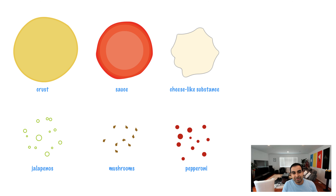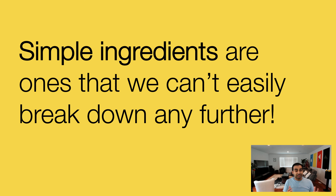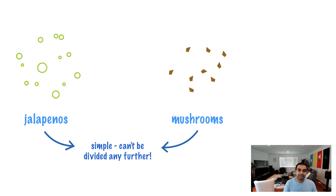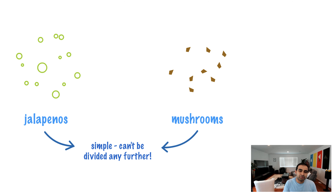Let's go a little bit deeper into what exactly I mean by simple and complex ingredients. A simple ingredient is something that you can't really break down any further. For example, you have your jalapenos and mushrooms — you can't really break those down any further. They are your most basic type of ingredient. These jalapenos and mushrooms are pretty much in their most basic form, a topping that you can use.